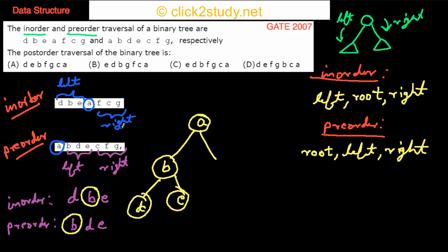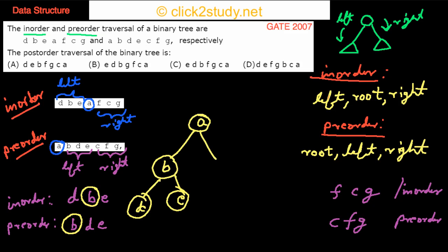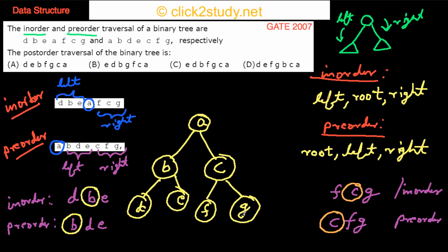For the right subtree, the in-order is F, C, G and the pre-order is C, F, G. Again, pre-order gives the root, so the root is C. In in-order, that means F is on the left and G is on the right. So you write C as the root with F and G as left and right children — the full tree is now built.